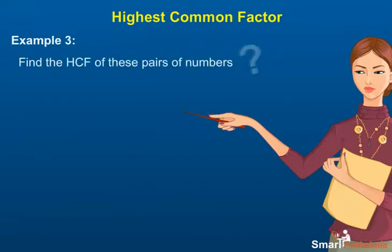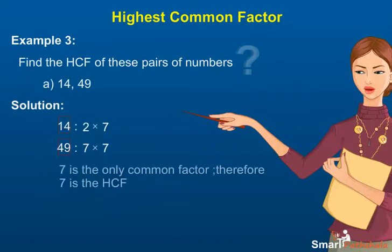Example 3. Find the HCF of these pairs of numbers. A: 14, 49. Solution. 14 equals 2 into 7. 49 equals 7 into 7. 7 is the only common factor. Therefore, 7 is the HCF.